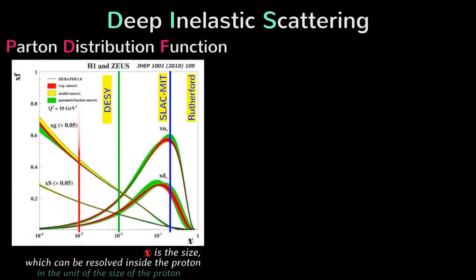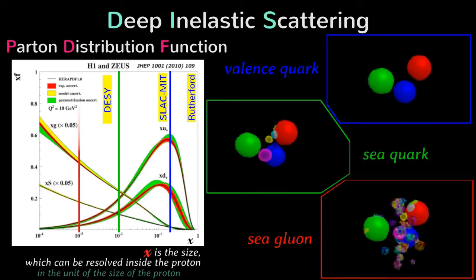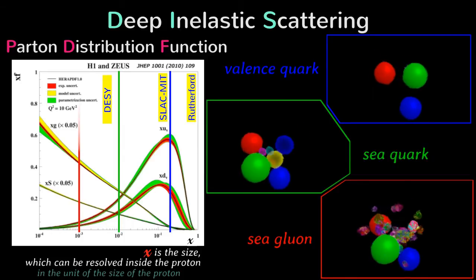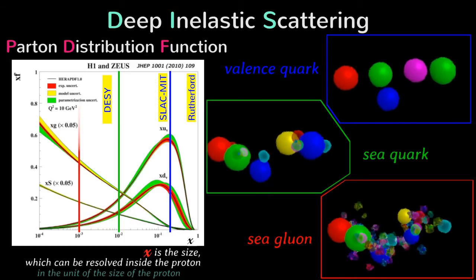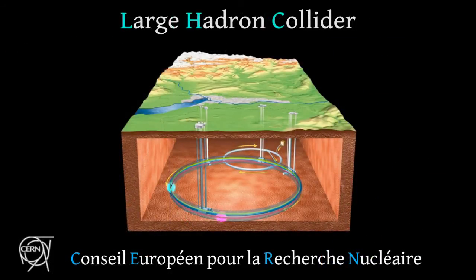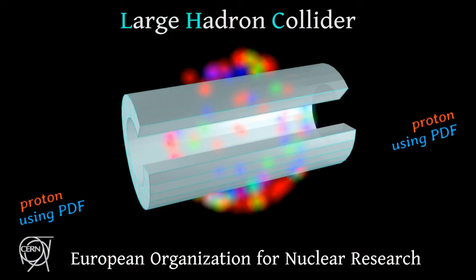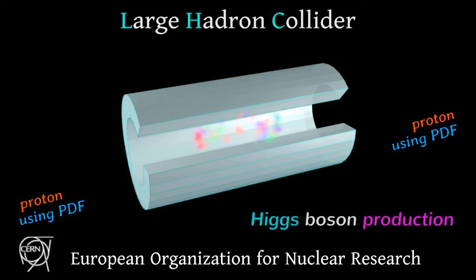The proton is a very complicated object. However, the investigation of deep inelastic scattering at DESY provides us with valuable information about the structure of the proton through the parton distribution function. We know with high precision how the different elementary particles — quarks and gluons — are arranged inside the proton according to their fundamental properties. This information is used for the description of events at the Large Hadron Collider at CERN, where protons are collided at very high energy. Because we know the structure of the proton, we know what to expect from such collisions. We can make a lot of predictions — in particular, we can calculate how Higgs particles will be produced.